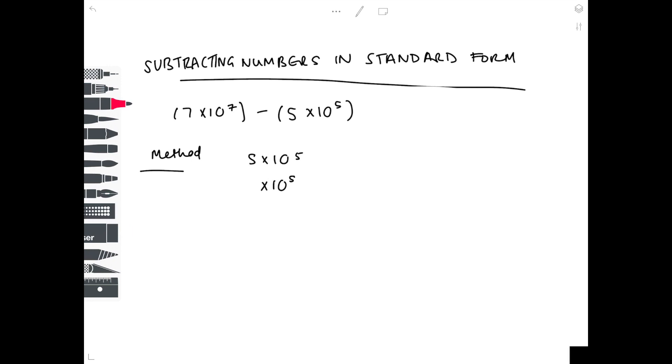We keep 5 times 10 to the 5 the same. We now need to make 7 times 10 to the 7 to a power 5. Because to the power 7 is a much larger number than to the power 5, we need to add zeros. We have 700 times 10 to the 5 minus 5 times 10 to the 5. Now you just take that number away from this number, so it becomes 695 times 10 to the 5. We need to make that a standard form number, so it will become 6.95 times 10 to the 7.